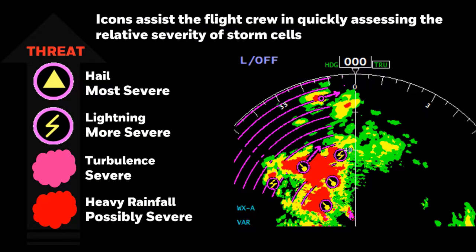The hazard display provides significantly more information to the flight crew on the severity and probability of weather threats. Standard reflectivity is calibrated to rainfall rate per FAA requirements, providing a probability of convective turbulence. Red weather is possibly severe, and magenta is definitely severe as it's a direct measurement of turbulence. Areas of attenuation are shown with magenta arcs. Lightning and hail are directly related to threat level as the vertical growth and profile are analyzed. These capabilities provide greater situational awareness and enable crews to avoid areas with high likelihood of lightning strike or hail encounter.